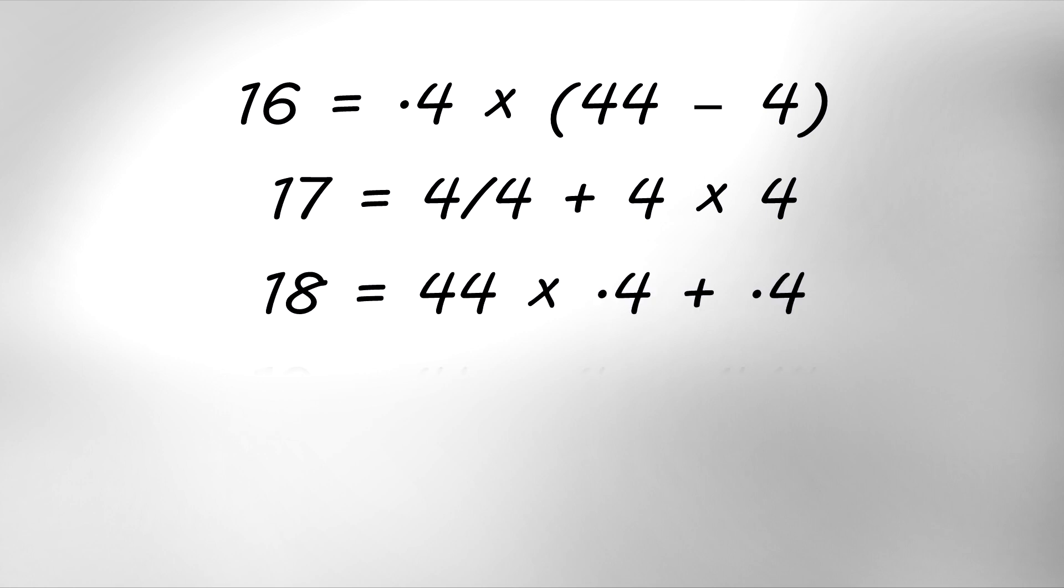18 equals 44 times 0.4, which is 17.6, plus 0.4. 19 equals 4 factorial, minus 4, minus 4 over 4.